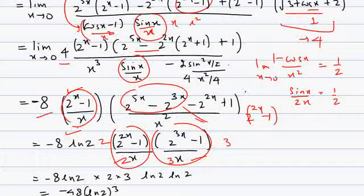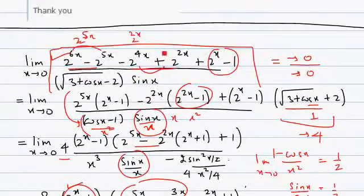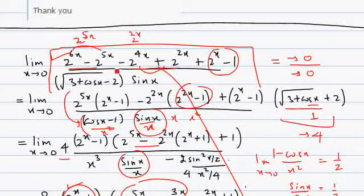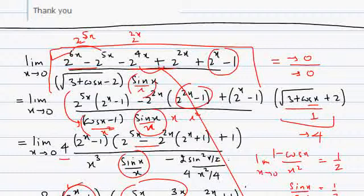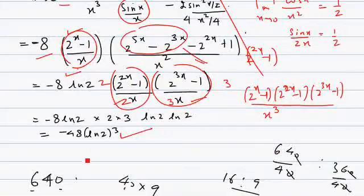Essentially, we have factorized the exponential part into three factors: (2^x - 1), (2^2x - 1), and (2^3x - 1). With x cubed in the denominator, each factor paired with its corresponding x gives a limit of log 2, log 2, and log 2 respectively (scaled by 1, 2, and 3). Combining everything — the factor of minus 8 from the trigonometric part and the three exponential limits — we arrive at the final limiting value.